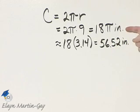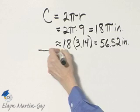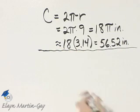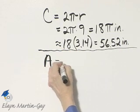This is the exact circumference. This is the approximate circumference. Now, not only were we asked to find the circumference, we were asked to find the area. So let's find the area of this circle.